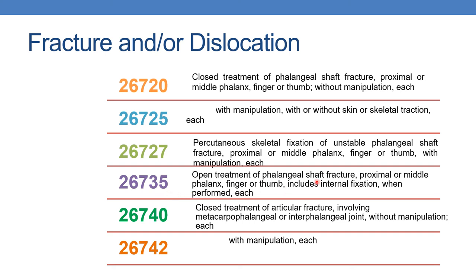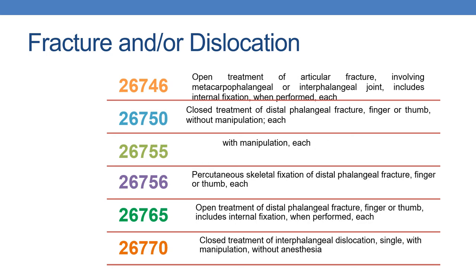The next is 26720: closed treatment of phalangeal shaft fracture, proximal or middle phalanx, finger or thumb, without manipulation. With manipulation is reported with 26725. Percutaneous skeletal fixation of unstable phalangeal shaft fracture, finger or thumb, proximal or middle phalanx, with manipulation is given by 26727. Next is 26735: open treatment of phalangeal shaft fracture, proximal or middle phalanx, finger or thumb, including internal fixation when performed. Next is 26740: closed treatment of articular fracture involving metacarpophalangeal or interphalangeal joint, without manipulation, each. With manipulation is given by 26742. Open treatment is given by 26746. With manipulation is reported with 26755. Percutaneous skeletal fixation is given by 26756.